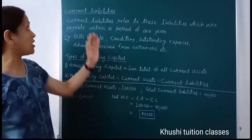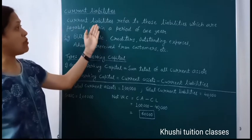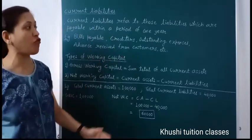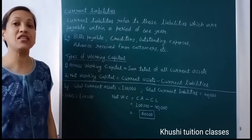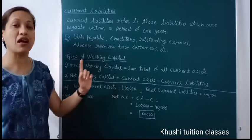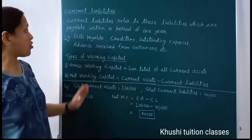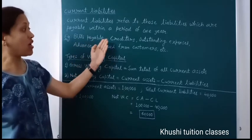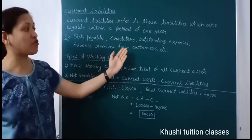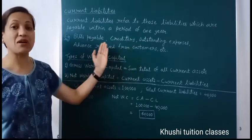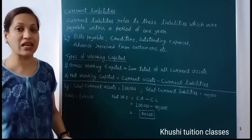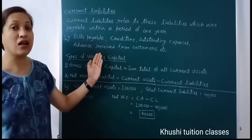Now we see the concept of current liabilities. Current liabilities refer to those liabilities which are payable within a period of one year. Liabilities whose payment we have to make within one year are called current liabilities. For example: bills payable, creditors, outstanding expenses, advance receipt from customers. Customers from whom we have taken an advance — we now have to provide them services — so that is our liability.